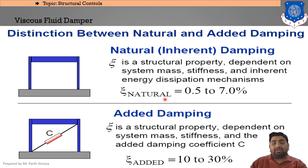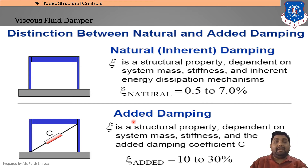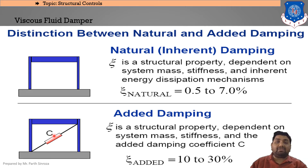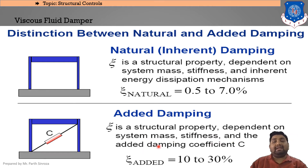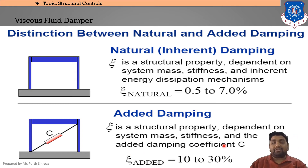Natural damping ranges from 0.5% to 7% depending on the structure category. Added damping refers to the PED devices we add to the structure. In this case, a damper with coefficient c is added, which adds to the damping effects the structure already inherits. The structural property now depends on system mass, stiffness, and the added damping coefficient c.